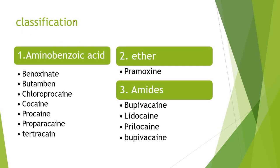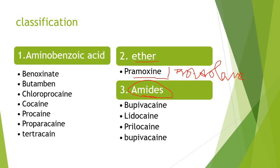The classification of local anesthetics includes the aminobenzoic acid group, the ether group, and the amides group. In the amides group, the drugs include bupivacaine, lidocaine, and prilocaine. In the ether group, there is Pramoxine, which is available in the market under the name Tronothane, and is used as a local anesthetic especially in patients suffering from piles. Important groups to remember: aminobenzoic acid, ethers, and amides.